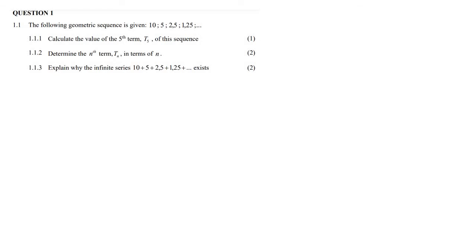In question 1 we are given a geometric sequence. The first question says calculate the value of the fifth term. To find T5, we use the basic geometric formula: T5 equals a times r to the n minus 1, where a is the first term, which is 10.